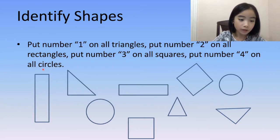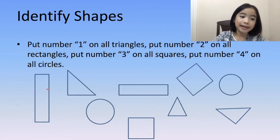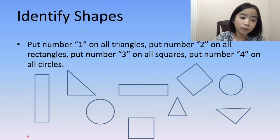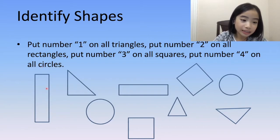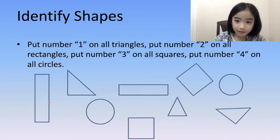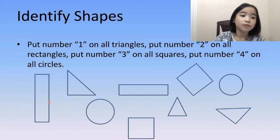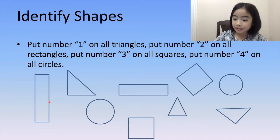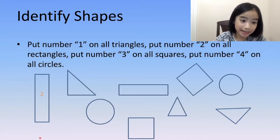First, let's look at this shape over here. It has four sides and four corners, but these two sides are not equal. So, this is a rectangle. Let's put the number two on this rectangle.